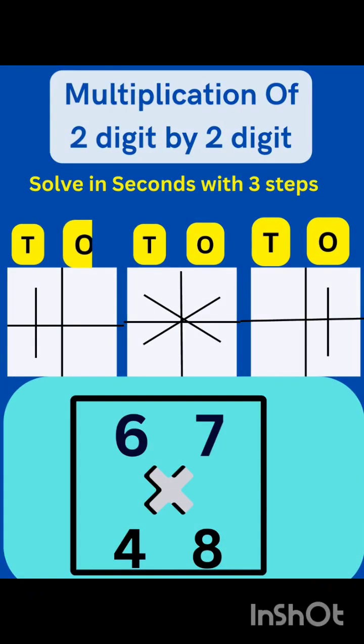Multiplication of 2 digit by 2 digit with Vedic Maths. Multiply 67 by 48.